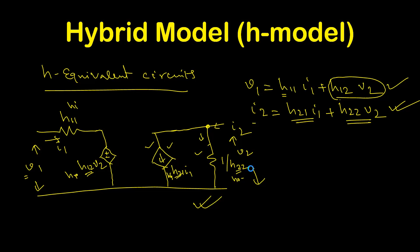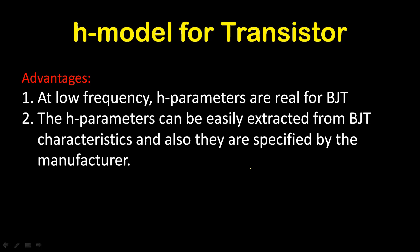Coming to the BJT: why do we adopt the H model for BJT and not other two-port network models such as Z parameter, Y parameter, etc.? There are a few reasons. At low frequency, the H parameters are real numbers, since we are not considering any capacitive part. Also, H parameters can be easily extracted from BJT characteristics — if you plot the input and output characteristics experimentally, you can graphically calculate the H parameters. Additionally, some manufacturers specify the values of H parameters in the transistor data sheet.